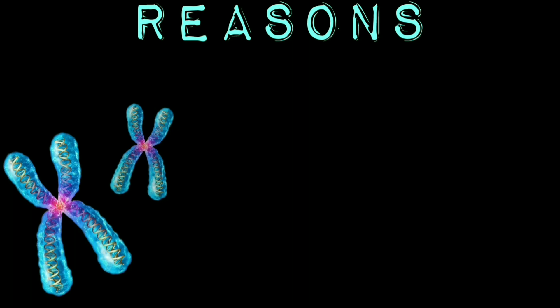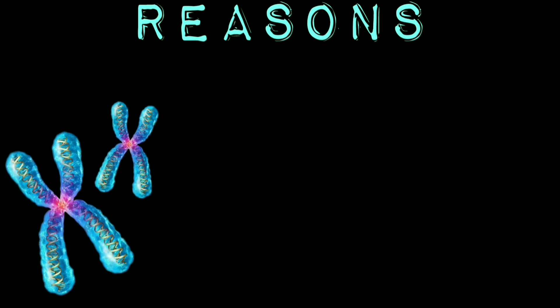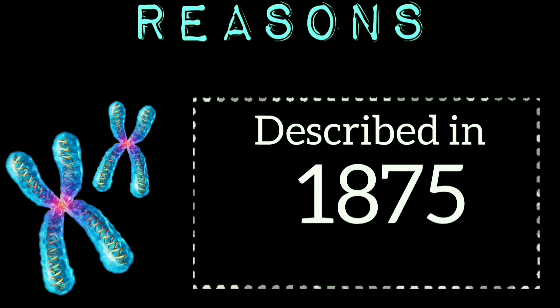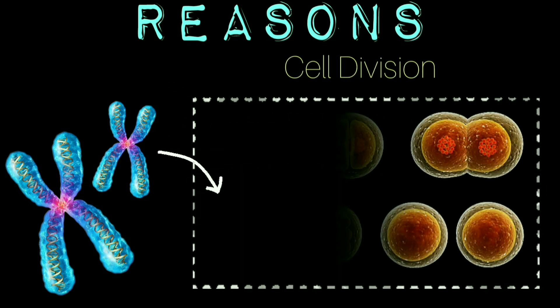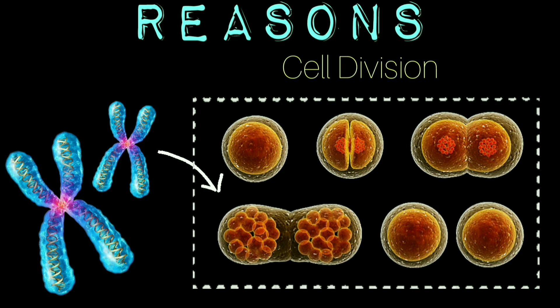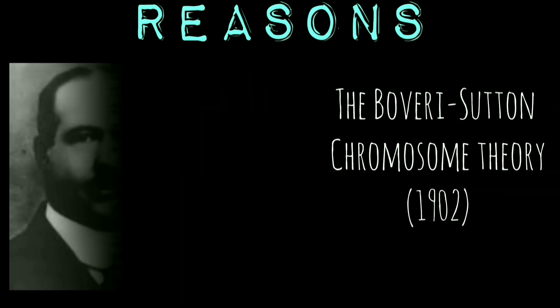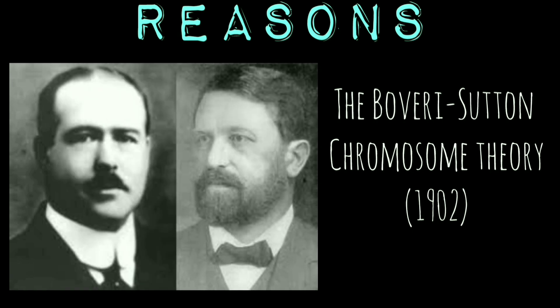First we need to understand the reason for learning about chromosomes. Why is it so popular in genetics? Although chromosomes were first described in 1875 and their behavior during cell division was the matter of extensive investigations, their role in heredity was suggested independently by Sutton and Boveri only in 1902.